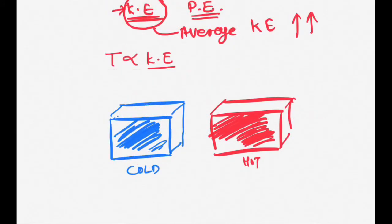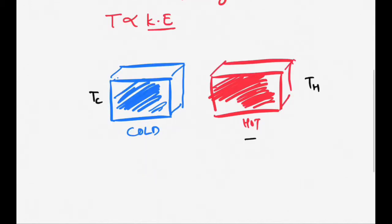Now let's consider two objects. One is cold with temperature Tc, and another is a hot object with temperature Th. As we know, Th is greater than Tc.